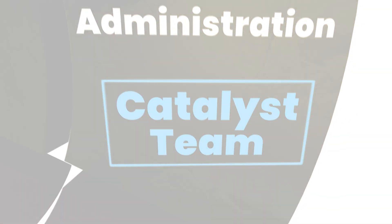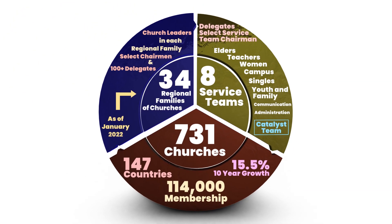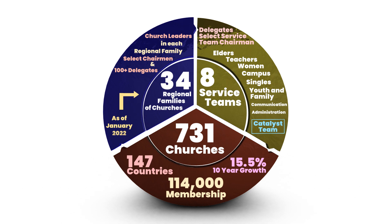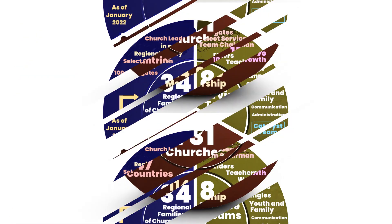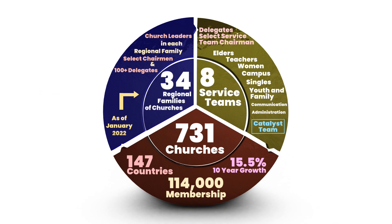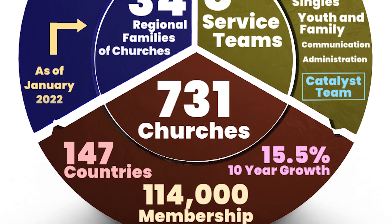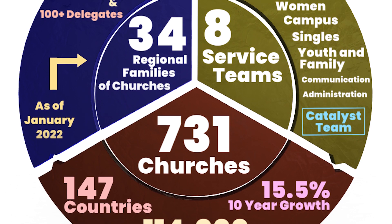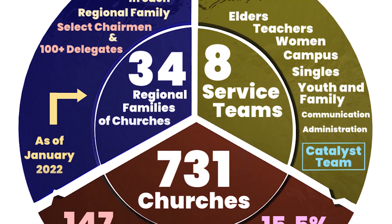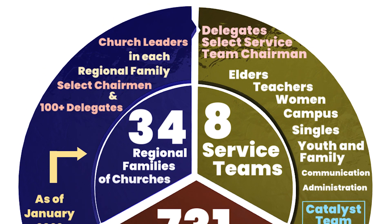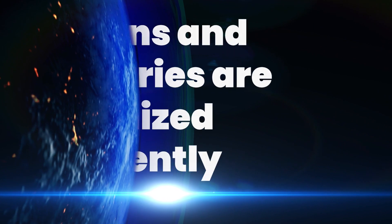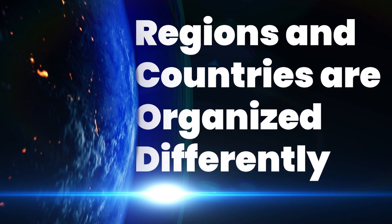So let's review. We have 731 churches organized into 34 families of churches by region. Each of these families has a chair couple to organize and facilitate as they work to meet global and local needs. Each family of churches also has delegates involved in leadership meetings, decision-making, and creating proposals to better and further the church in unity and missions, guided and aided by the Catalyst team. The various service teams and task forces exist to serve specific needs of the churches and disciples. Each culture and country can organize how they see fit, and different regions are organized differently.